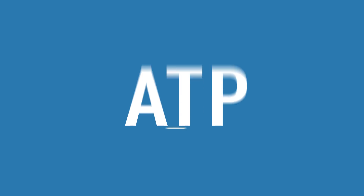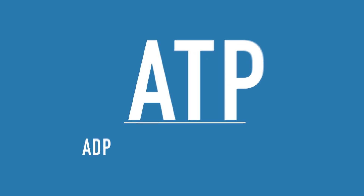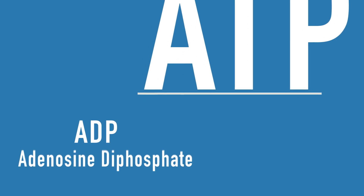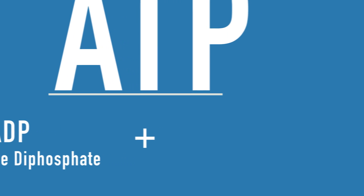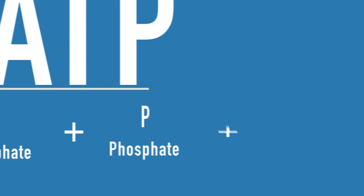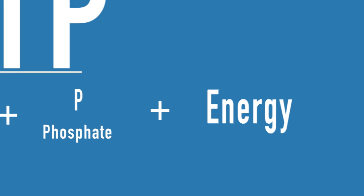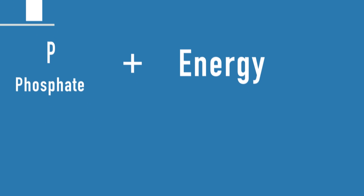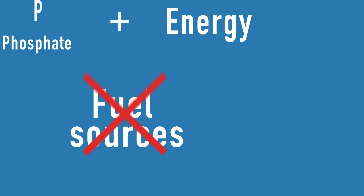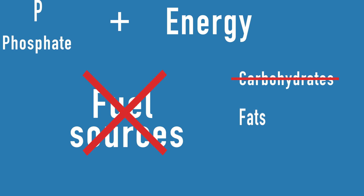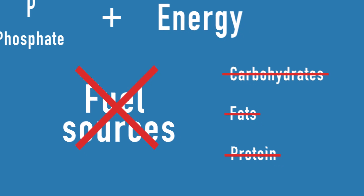The breakdown of ATP creates ADP, adenosine diphosphate, a single phosphate molecule and energy. This means that there are no fuel sources needed within this system, like carbohydrates, fats and proteins to form the energy.